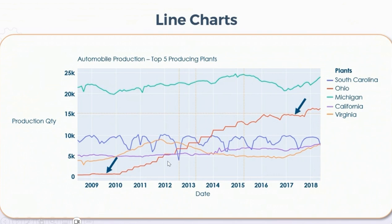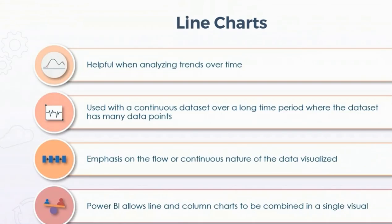This is the main difference between bar chart and line chart. Line charts represent information with time, whereas bar charts are really useful for comparison of two or more comparative statements. Line charts are really helpful when you want to analyze trends over time. Line charts can be used with a continuous data set over a long time period where the data set has many data points, and it emphasizes the flow or continuous nature of the data which is visualized.